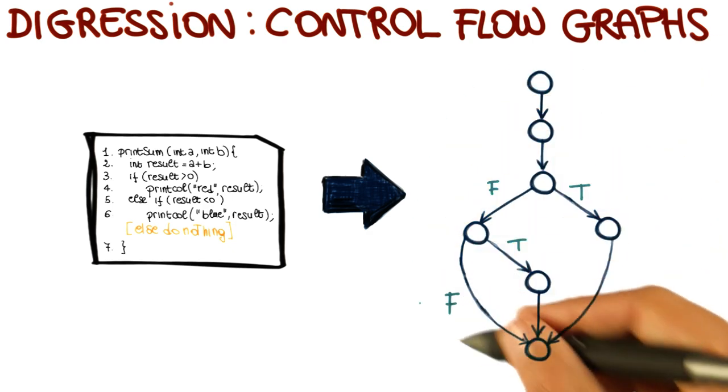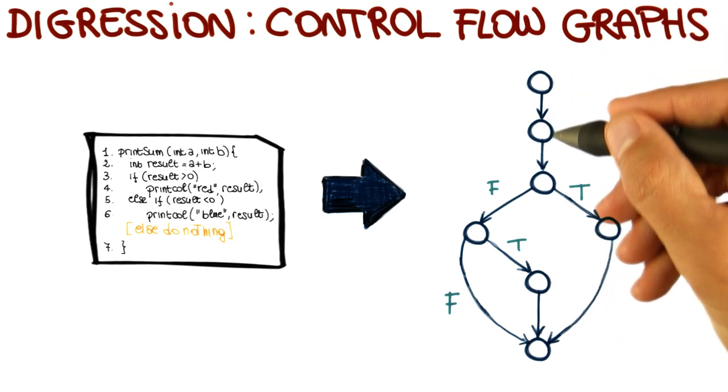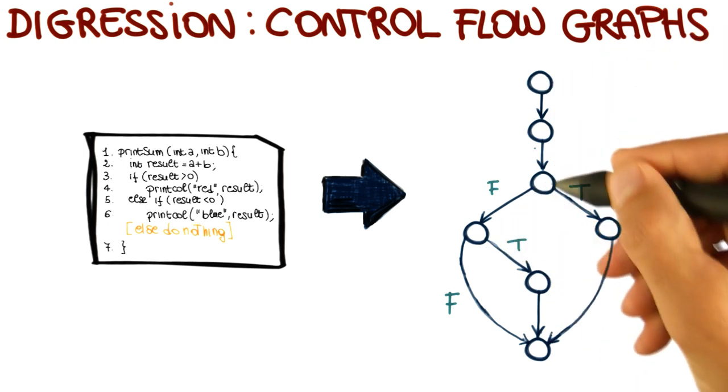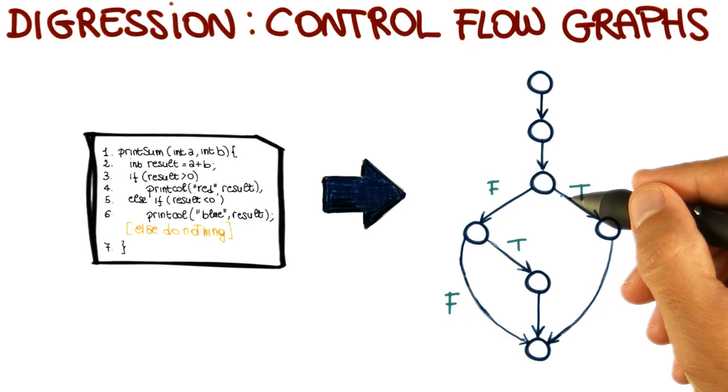So as you can see, this graph represents my code in a much more intuitive way, because I can see right away where the control flows while I execute the code. So we're going to use this representation to introduce further coverage criteria.